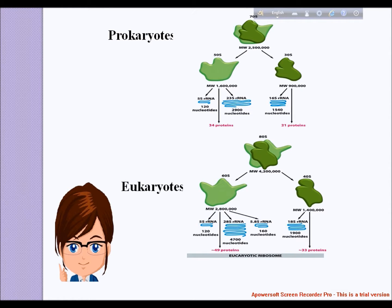The 28S, 5.8S, and 18S rRNAs are encoded by a single transcription unit, the 45S, separated by two internally transcribed spacers. The 45S rRNA is organized into five clusters, each with 30 to 40 repeats on chromosomes 13, 14, 15, 21, and 22, and they are transcribed by RNA polymerase I. The 5S rRNA occurs in tandem arrays of 200 to 300 true 5S genes plus many dispersed pseudogenes, the largest cluster being on chromosome 1q41-42. The 5S rRNA is transcribed by RNA polymerase III.